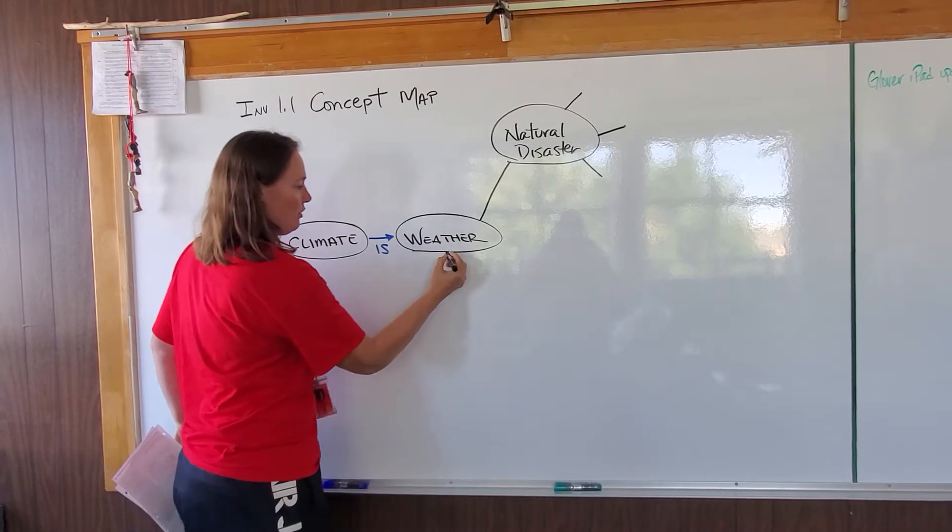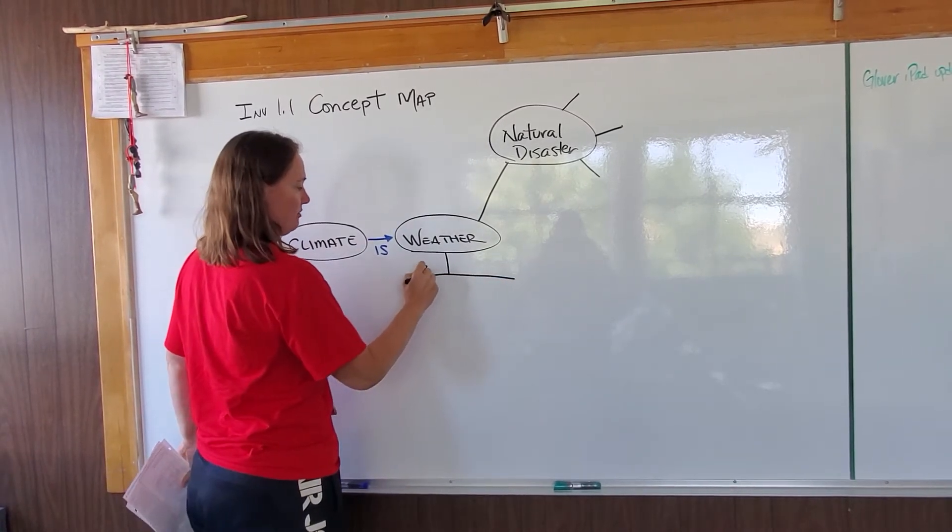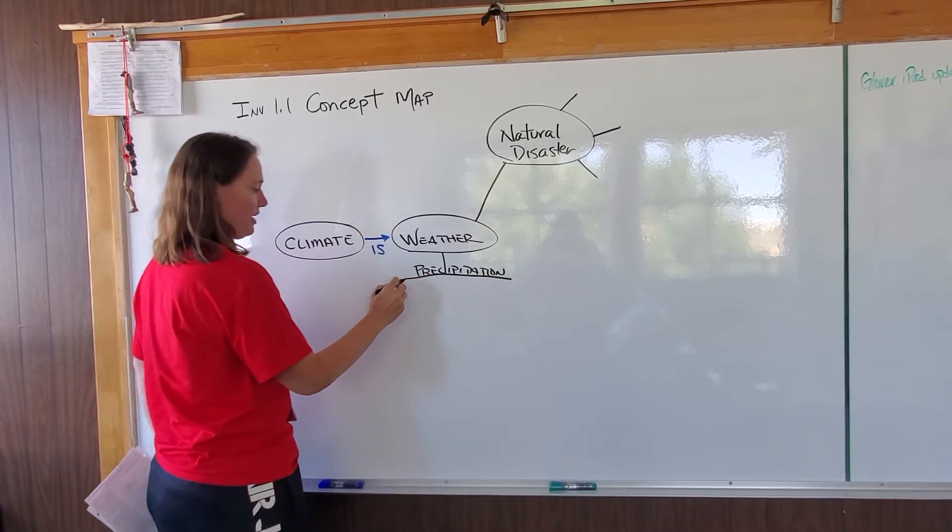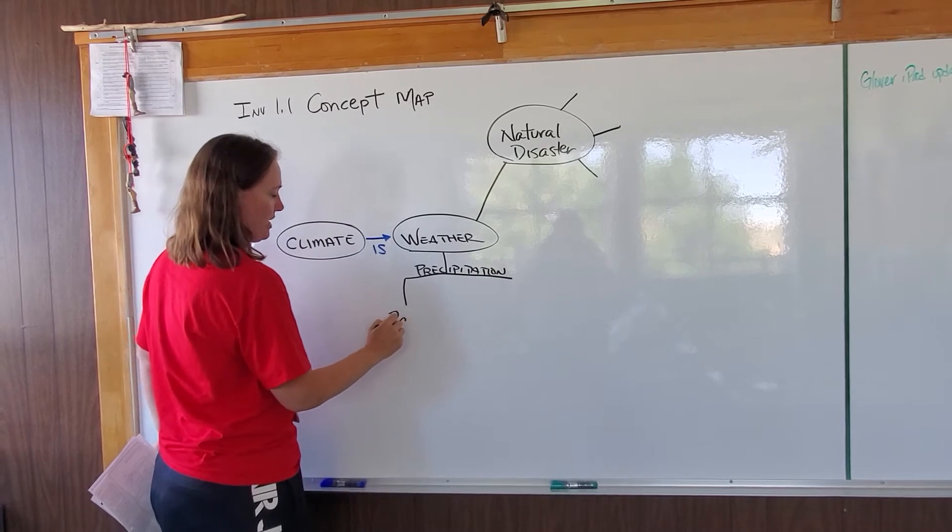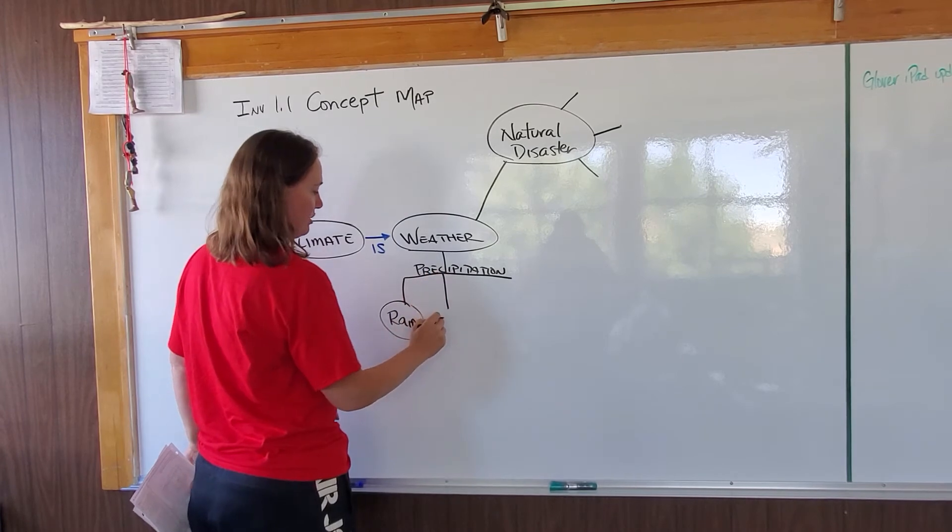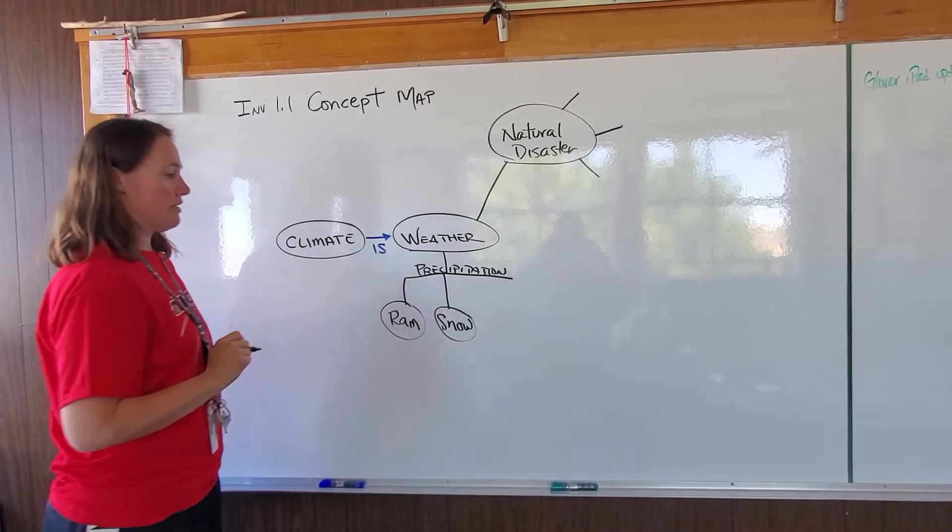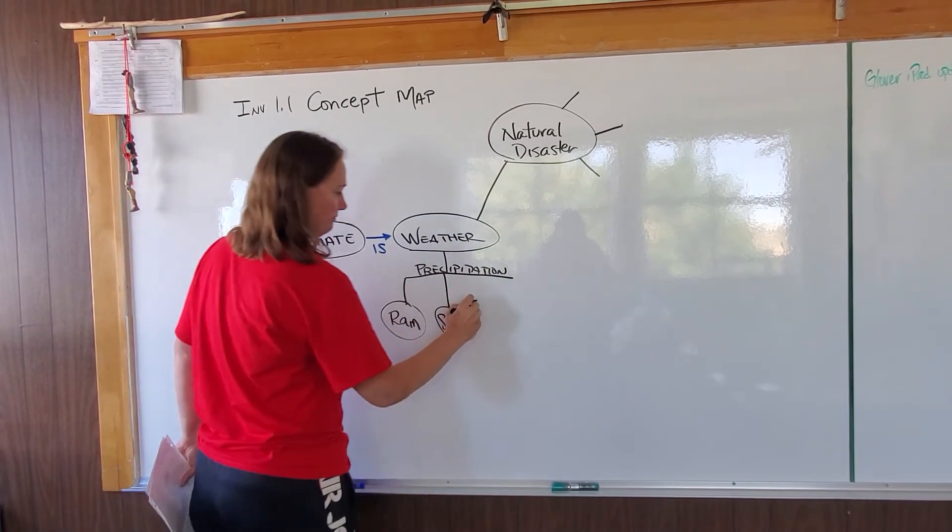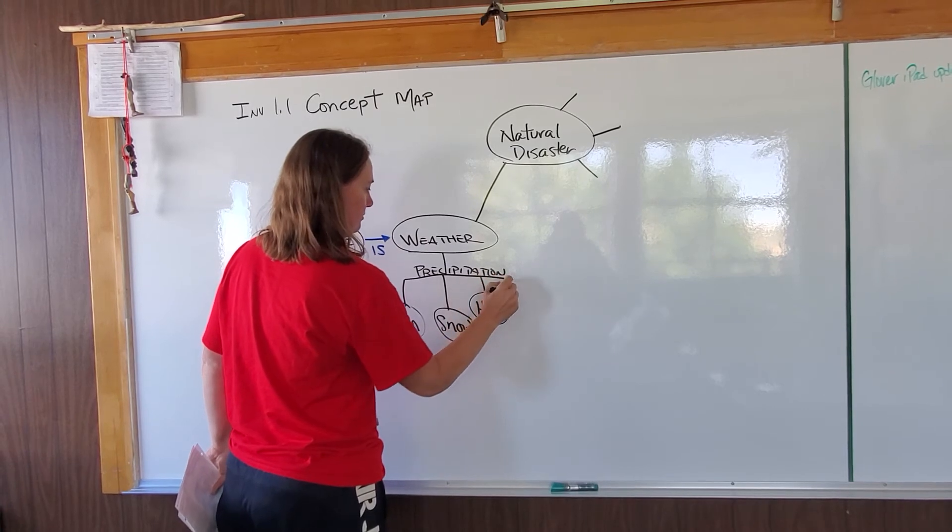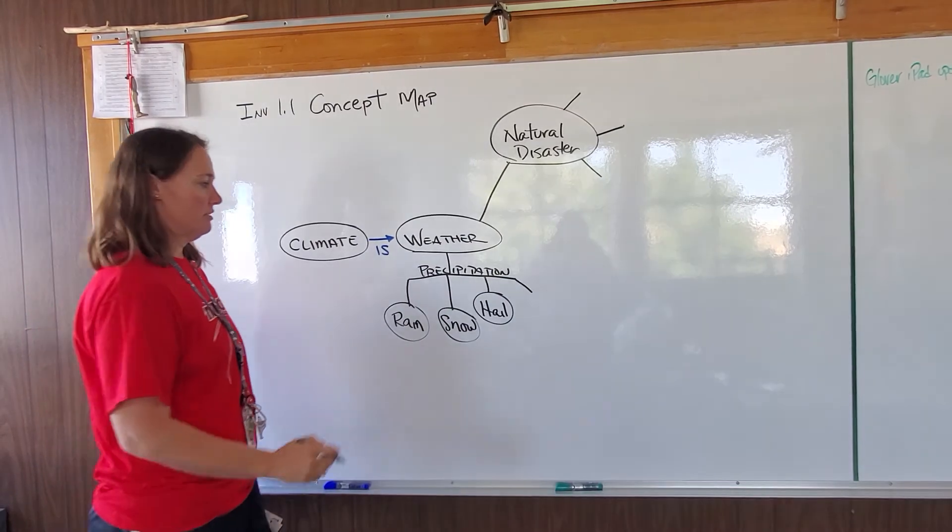What else do we know about weather? I know that weather has a lot of precipitation. So what are some kinds of precipitation? Rain. Rain's precipitation. Maybe snow. What other kind of precipitation? Hail. What else falls out of the sky? Sleet count? Sleet.